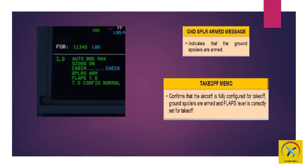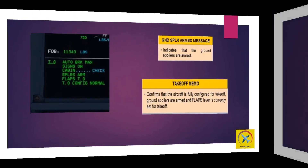There are memo messages which appear during takeoff and landing. Ground spoiler armed message indicates that the ground spoilers are armed. Takeoff memo confirms that the aircraft is fully configured for takeoff: ground spoilers are armed and the flaps lever is correctly set. Landing memo confirms that the aircraft is fully configured for landing: ground spoilers are armed and the flaps lever is correctly set at full, or at config 3 if in alternate law.